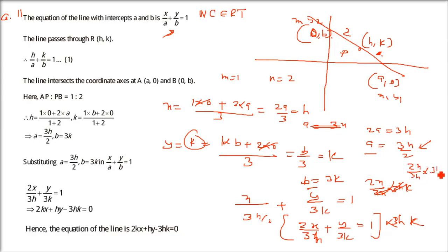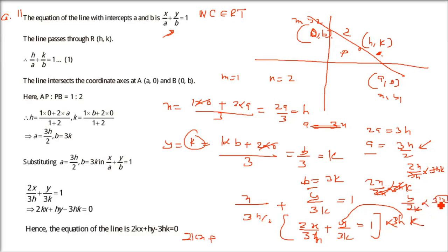After multiplying all members by 3h: the x term gives 2x, the y term gives (h/k)·y (since 3k cancels with 3h leaving h/k), and the right side is 3h. Rearranging, we get 2kx + hy - 3hk = 0. This is the locus equation for question 11.